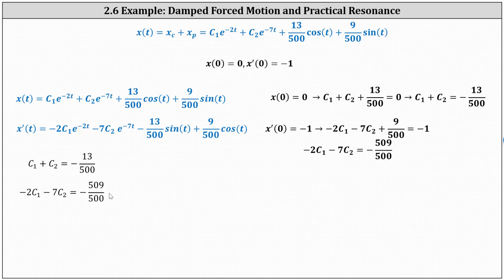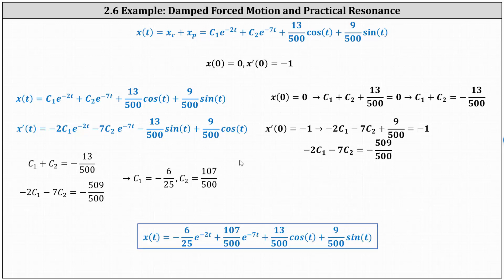You may want to pause the video and verify this. Solving the system gives c₁ = -6/25 and c₂ = 107/500. So now we know x(t) = x_c + x_p, which equals negative 6/25 e^(-2t) + 107/500 e^(-7t) + 13/500 cos t + 9/500 sin t. This is the equation that models the motion of the mass.